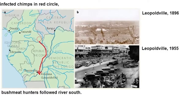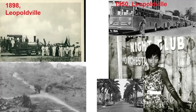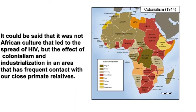What was going on in the 1950s in Africa? Urbanization for one. The cities of equatorial Africa experienced a population boom after World War II, along with colonial expansion. The world wanted the raw resources in Africa and needed local labor to extract it. This led to a disruption of traditional lifestyles and the rise of a post-industrial culture in a previously agrarian society. Prostitution and drug use may have increased as people left their towns and villages to find profitable work in the growing cities. It could be said that it was not African culture that led to the spread of HIV, but the effect of colonialism and industrialization in an area that had frequent contact with our close primate relatives.